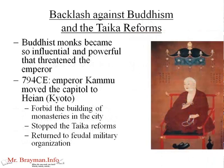This worked for a time, but there was a backlash against both the Buddhists and the Taika reforms. Because Buddhism became a state religion, Buddhist monks became very powerful and influential — to the point where one powerful Buddhist monk hatched a plot to have the emperor assassinated so he could take over and marry the empress. It shows how ambitious these Buddhist monks were becoming. It got so bad that in 794 CE, Emperor Kammu moved the capital to Heian, which is modern-day Kyoto, in order to forbid the building of monasteries in the city.